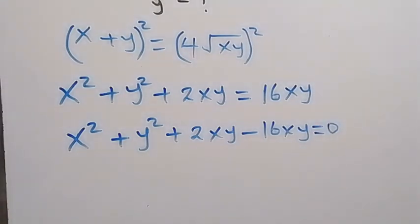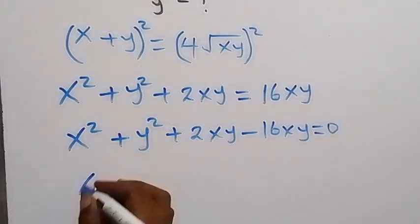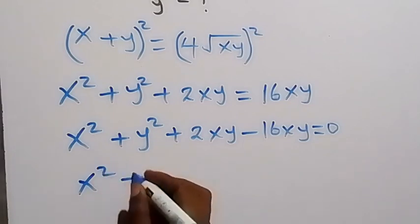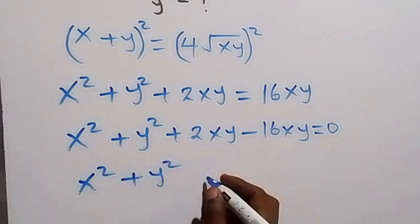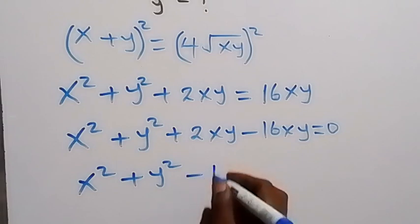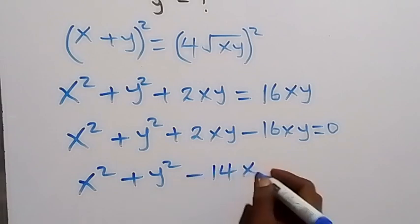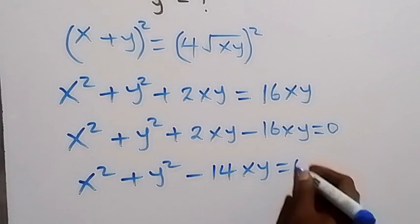And then when we rewrite this, this becomes x squared plus y squared, then this will give us minus 14xy equals 0.